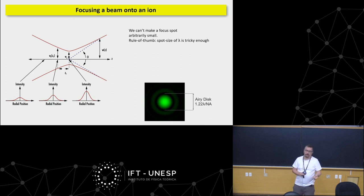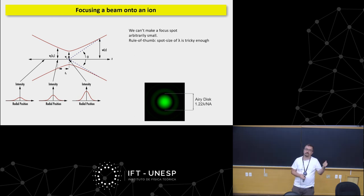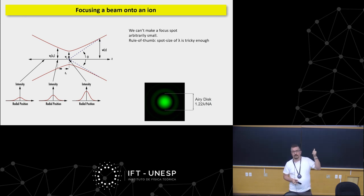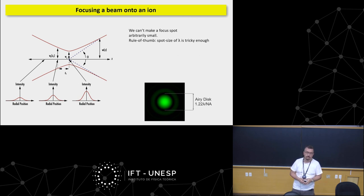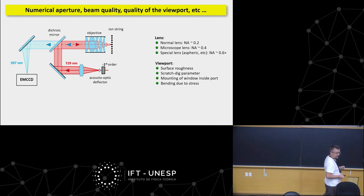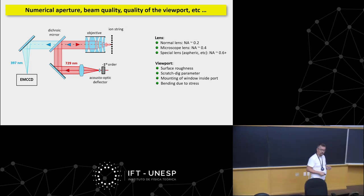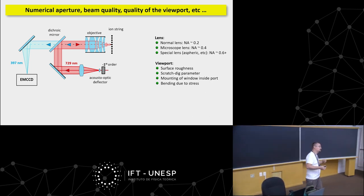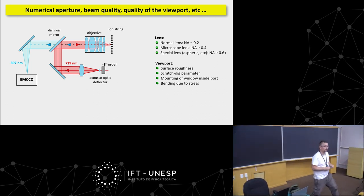If you are willing to invest more, Photon Gear and other companies have really nice lenses — then we talk about a numerical aperture of about 0.6, but those lenses cost 34,000 DKK. Another thing as we address these ions — one tricky part we didn't talk about, which is experimental detail — the lecture was meant to go a little down the rabbit hole.